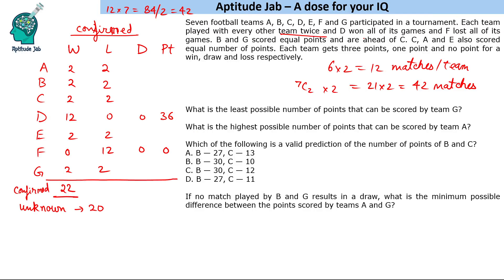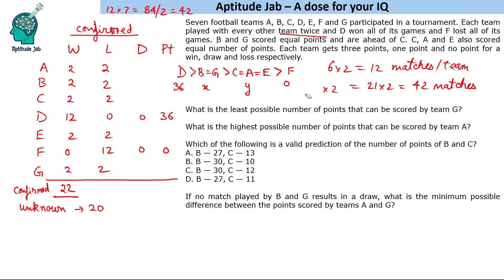D won all its games, so D has the highest total at 36 points. F lost all its matches so F is last at 0 points. B and G scored equal points (call it X) and are ahead of C. C, A, and E also scored the same number of points (call it Y). So the order is: D (36) > B = G (X) > C = A = E (Y) > F (0).